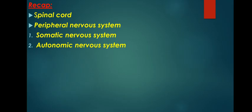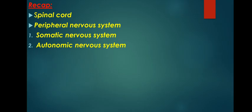Peripheral nervous system. It is a division of the nervous system containing all the nerves that lie outside of the central nervous system. The primary role of the peripheral nervous system is to connect the central nervous system to the organs, limbs and skin. The peripheral nervous system itself is divided into two parts: the somatic nervous system and the autonomic nervous system. Each of these components play a critical role in how the peripheral nervous system operates.